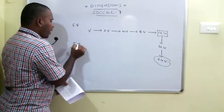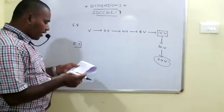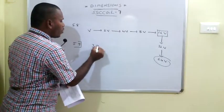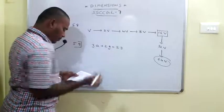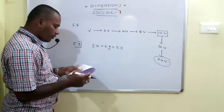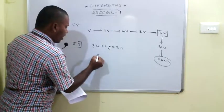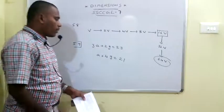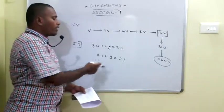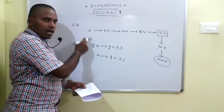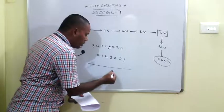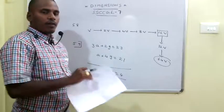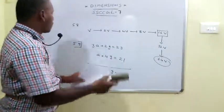The 59th problem: The cost of 3 apples and 2 guavas is 23 rupees: 3A + 2G = 23. The cost of 1 apple and 4 guavas is 21 rupees: A + 4G = 21. Multiplying the second equation by 3 and subtracting, we get G = 4 rupees. Since 1 guava costs 4 rupees, 5 guavas cost 20 rupees.